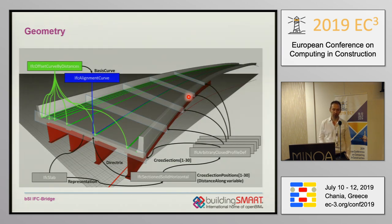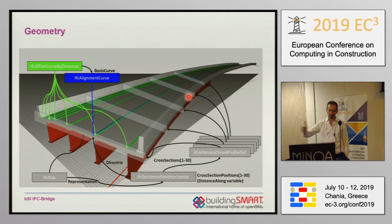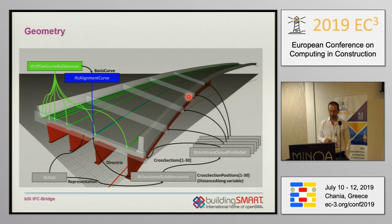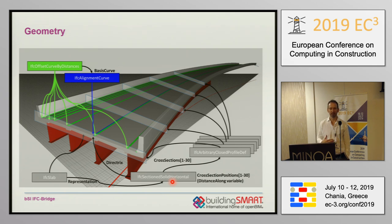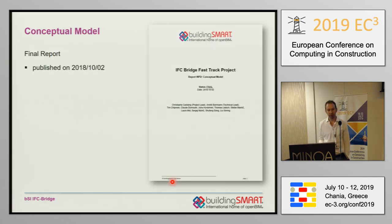We also checked the geometry, because of course we want to precisely describe the geometry of bridges. Many of the use cases depend on a sweeping of cross-sections along the alignment, because this is the best representation you can get of a bridge in design. We found that IFC Section Solid Horizontal, which was introduced in IFC 4.1, provides enough flexibility and functionality to describe the geometry of even very complex bridges. This was reported in the conceptual model report published in October 2018 and approved by the expert panel.